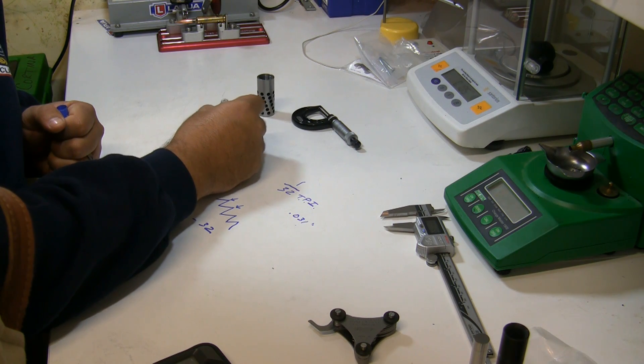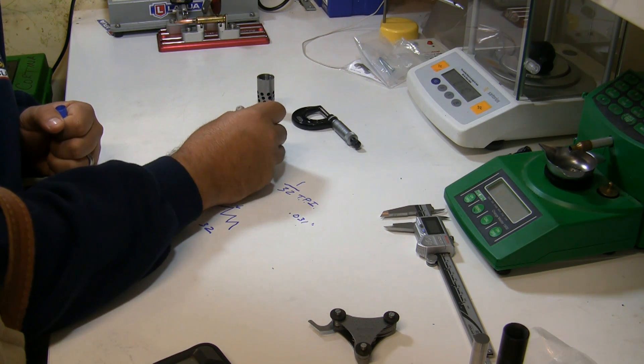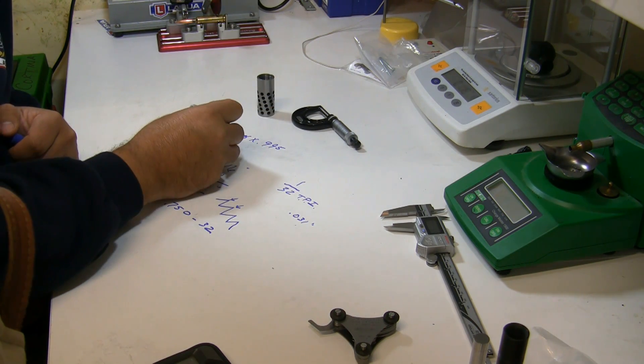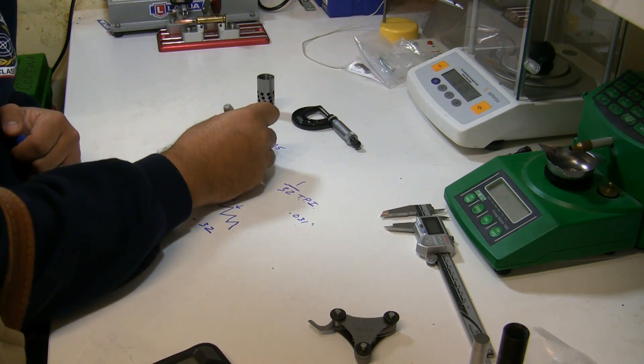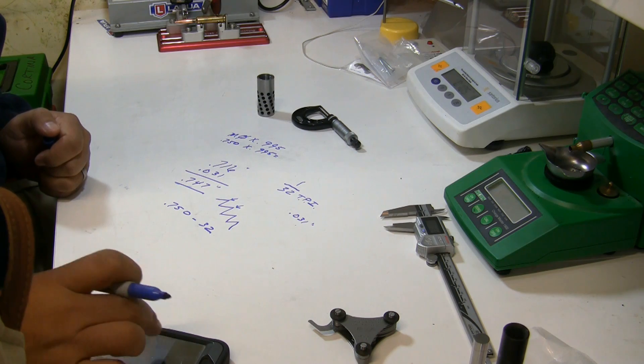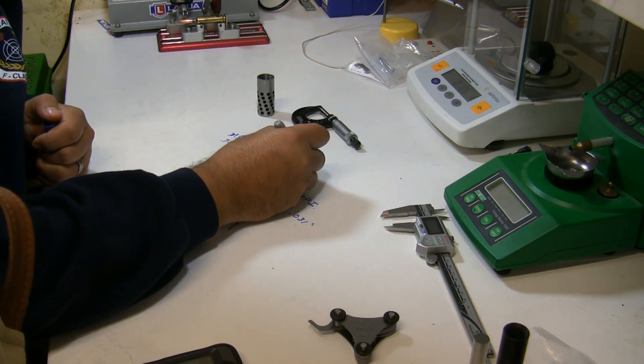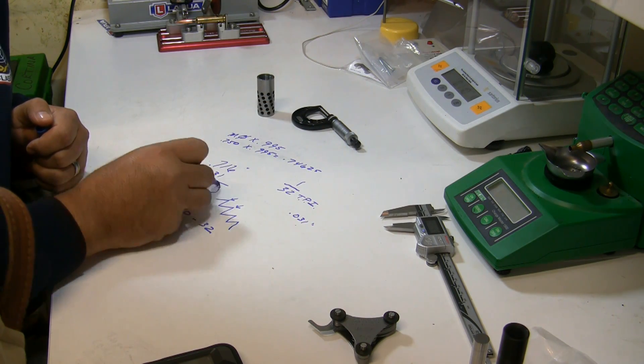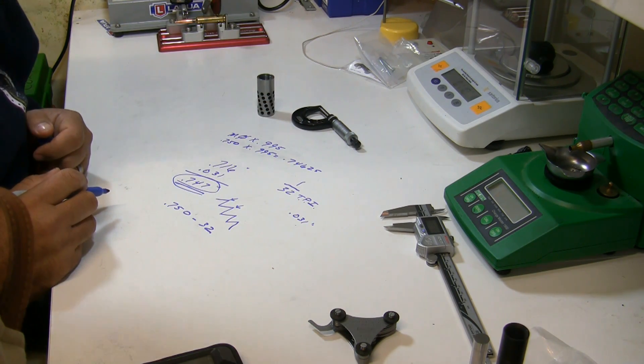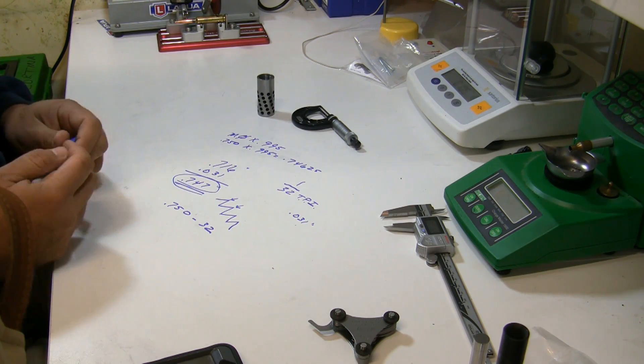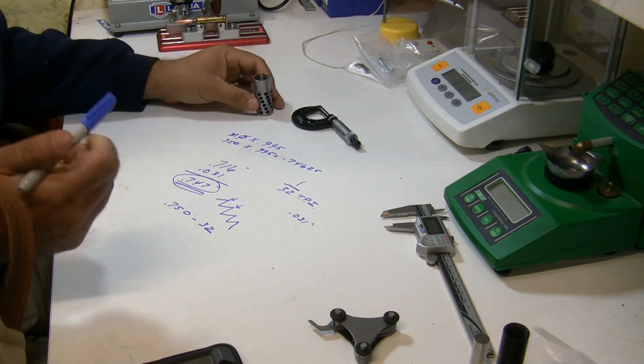It's major diameter times 0.995. So the major diameter is 750 thousandths times 0.995, that gives us 0.74625, which is precisely... you know, I mean it's within one thousandth. 747 will certainly work. So what I'm going to do is I'm going to go to the lathe.